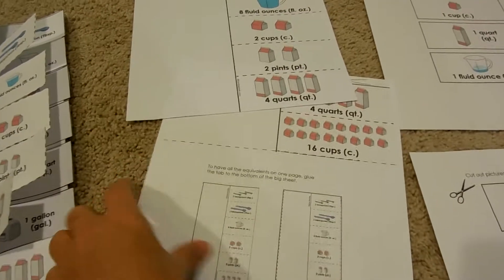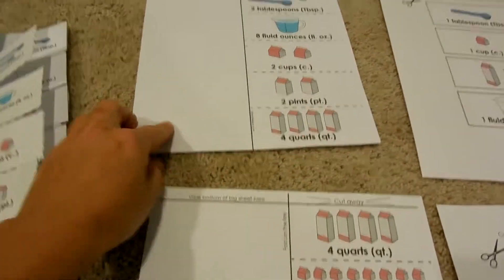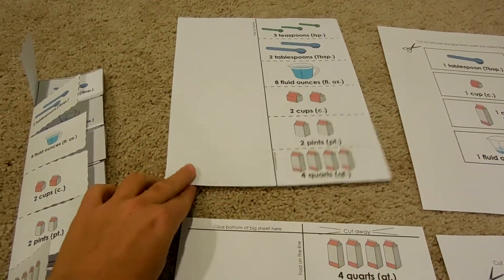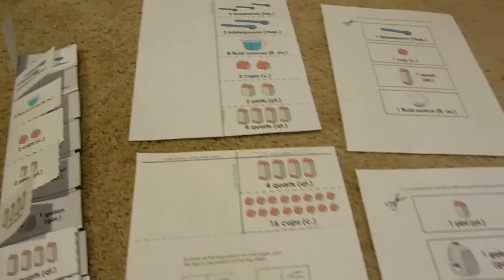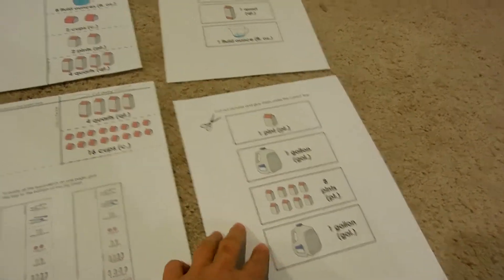You're going to glue the short one to the bottom of the long one and then you'll have all the conversions in one. And then here's the answers where your child can cut and then paste it under each flap.